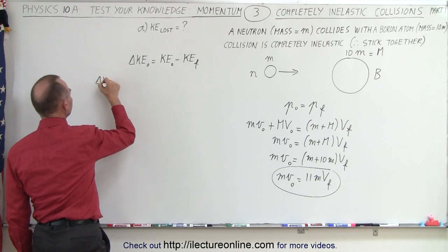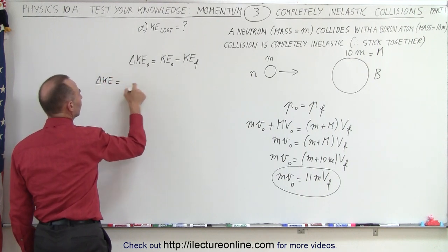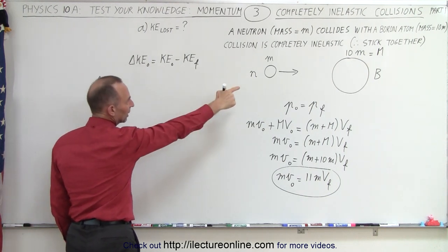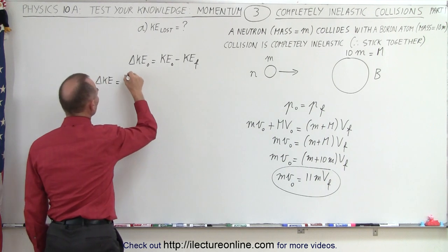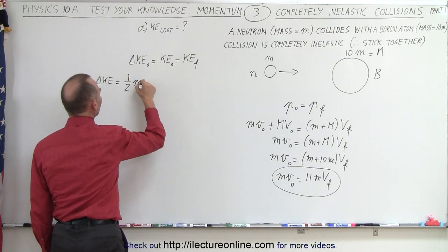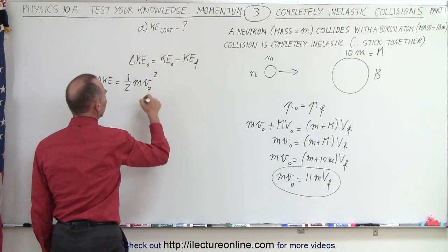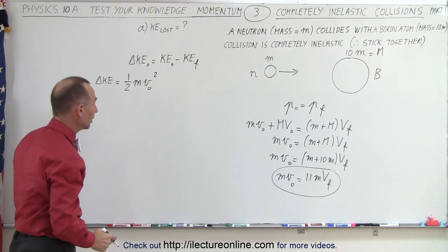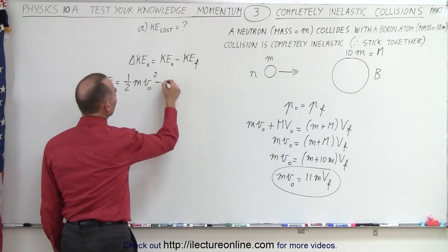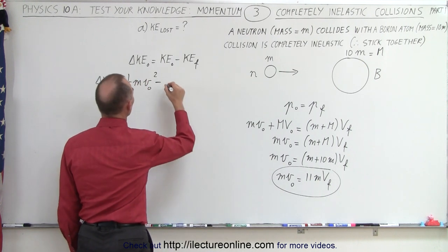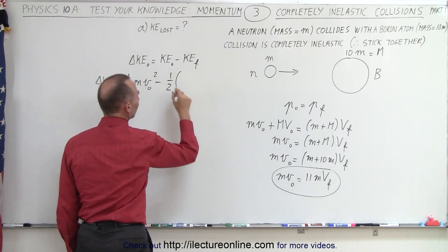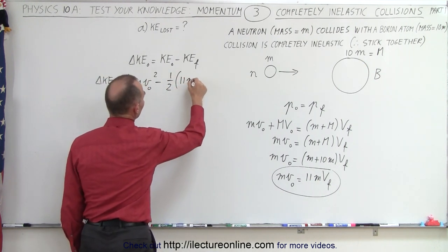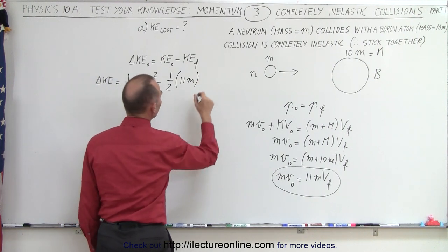So the delta kinetic energy is equal to the initial kinetic energy, which is the kinetic energy of the neutron, which is 1 half mv initial squared, even though we don't know what it is, we can simply write it as v initial, minus the kinetic energy of the two combined, which would be 1 half times the sum of the two, which is 11m, times v final.